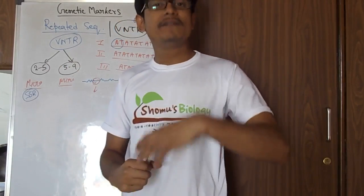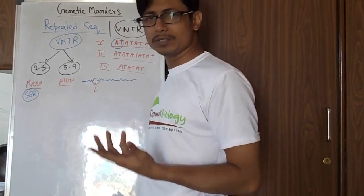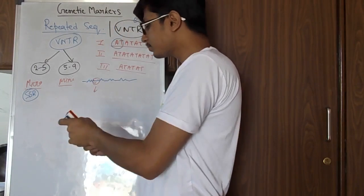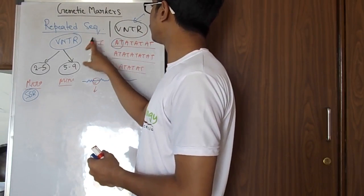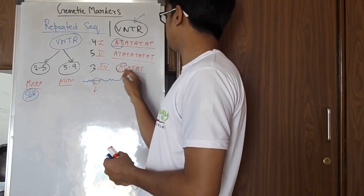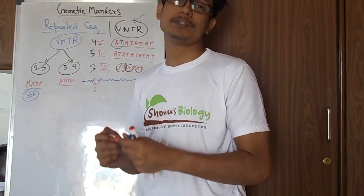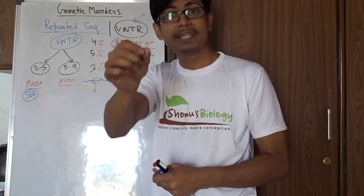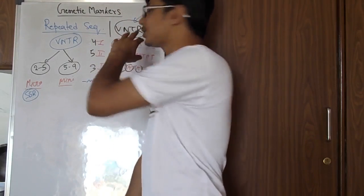Why is it called variable number? Because if you take three different individuals, the number of repeats varies. In individual 1, the A-T repeat is present four times. In individual 2, it is present five times. In individual 3, it is present only three times. The number of repeats varies between individuals, and this variability gives a specific characteristic profile unique to that person — which is why we can use it as a genetic fingerprint. This is called VNTR.